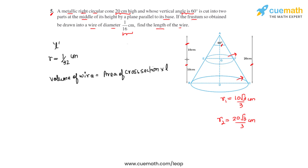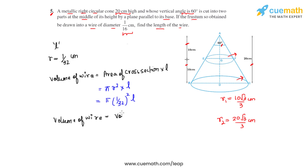The area of the cross-section is a circle, so area = π·r². Substituting r = 1/32, the volume of the wire = π·(1/32)²·l. We equate the two volumes — volume of wire equals volume of frustum — giving π·l/(32 × 32) = 22000/9.